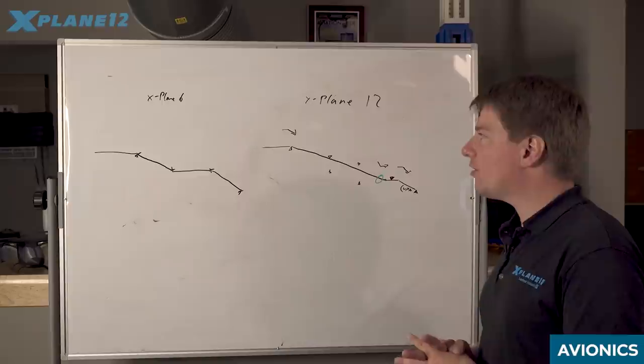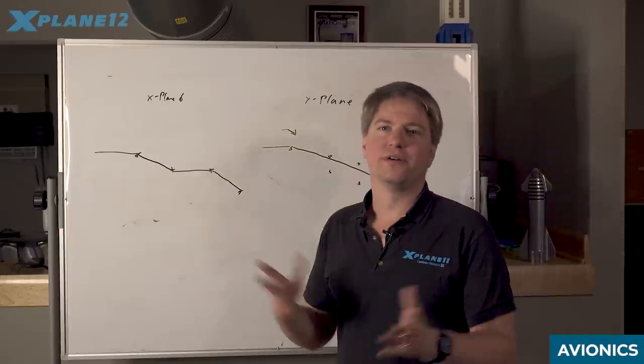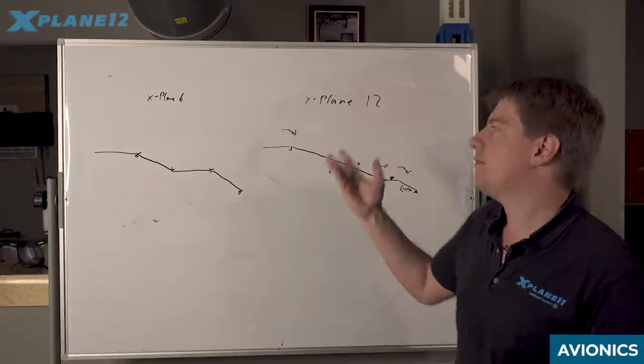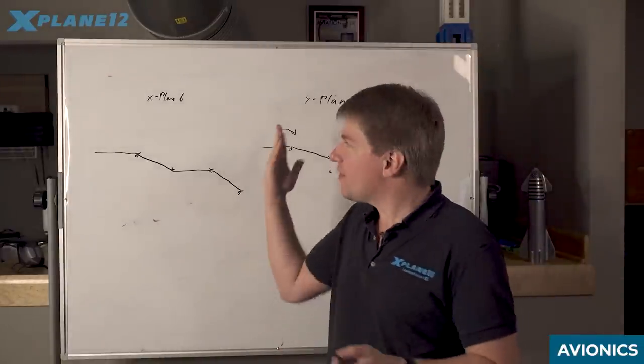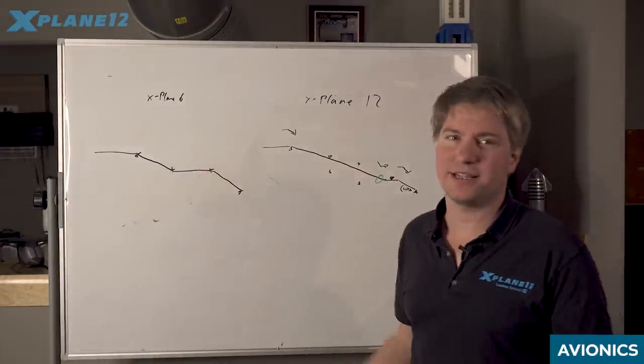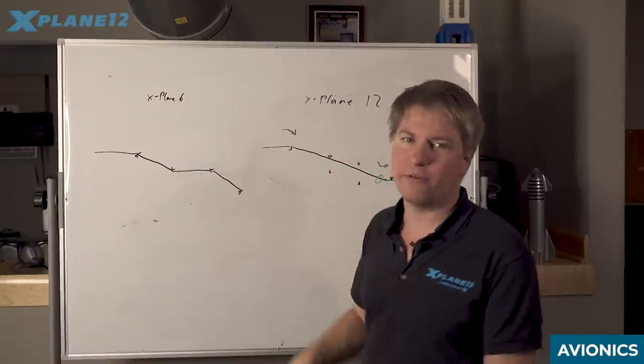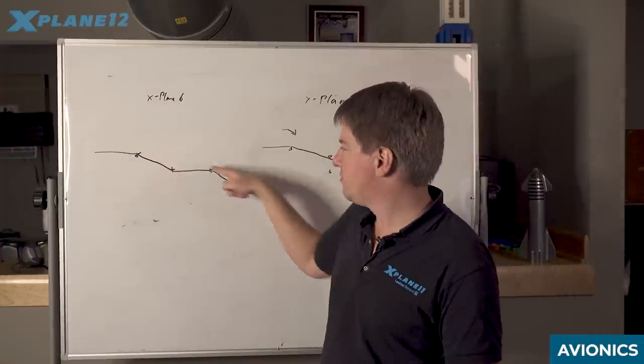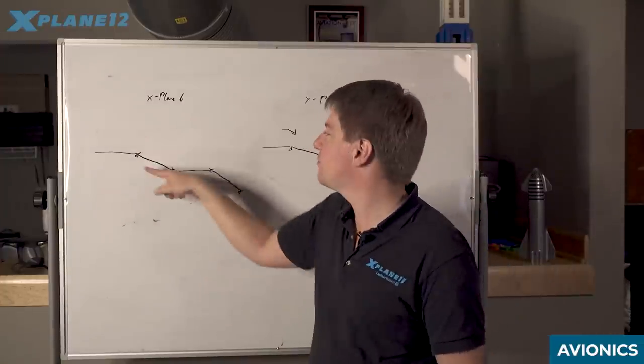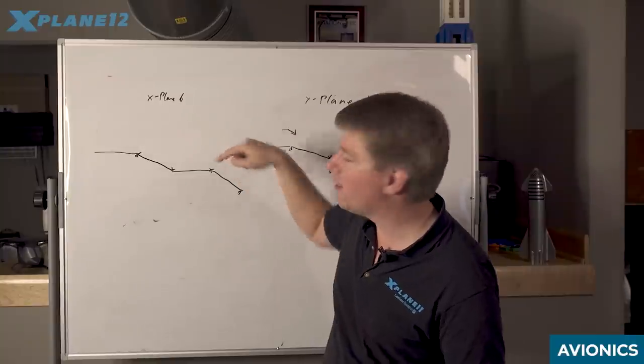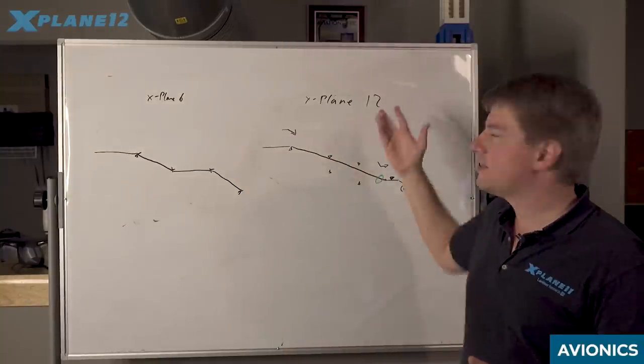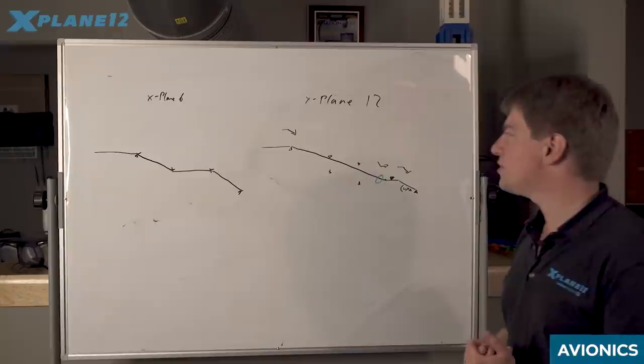The X-Plane FMS and Autopilot can work together to fly a VNAV descent. Up until now we were using a system that originally came out of X-Plane 6, where you could pretty much only define altitudes at waypoints and it would just connect the dots, play a game of connect the dots and hit the altitude at each waypoint. The system in X-Plane 12 is a little bit more sophisticated in that the airplane can specify what the idle path would look like.